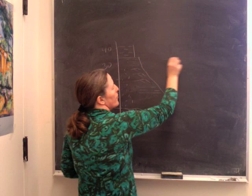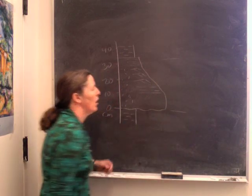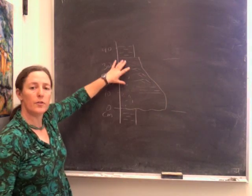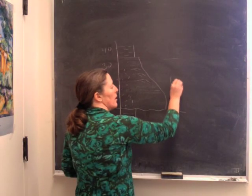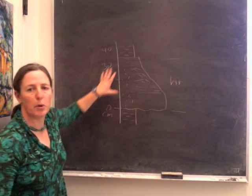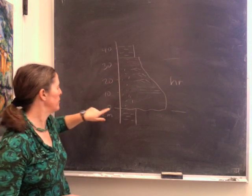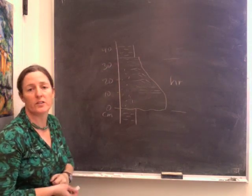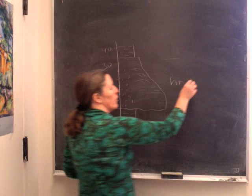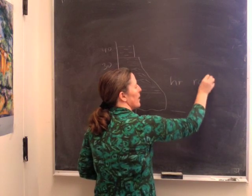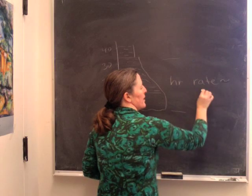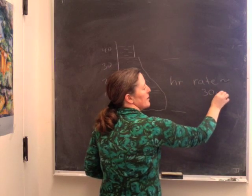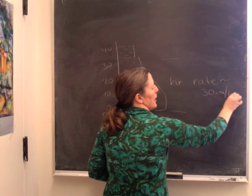If you're looking at the bulk of this particular turbidite, this part of it might be deposited in an hour. That's about 30 centimeters in one hour. So the rate of deposition might be something like 30 centimeters per hour.